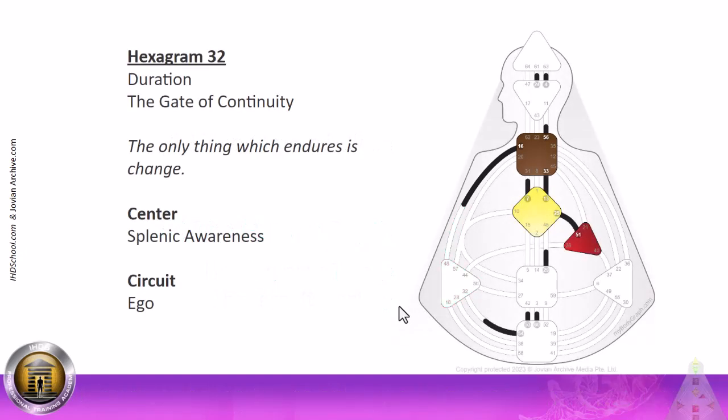Hexagram 39 is duration, the gate of continuity. The only thing which endures is change. The center itself is the splenic awareness. Within the circuitry, it is the ego. So, we now have layers of not-self strategy that we can see. If you look at the splenic system, two very powerful forces, that 48 and that 32. And then we've got the open, undefined root, going to that undefined splenic, very open splenic.